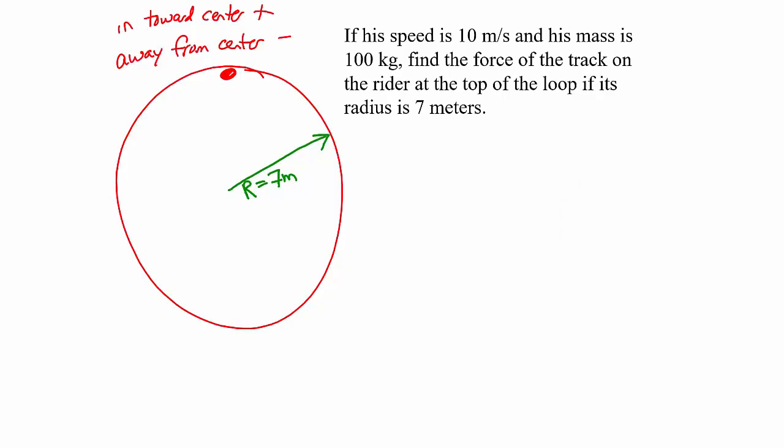In the first situation, we're going to assume that the man and his bike together have a mass of 100 kilograms. If the speed at the top of the loop is 10 meters per second, we want to calculate how big is the force of the track pushing down on the rider.